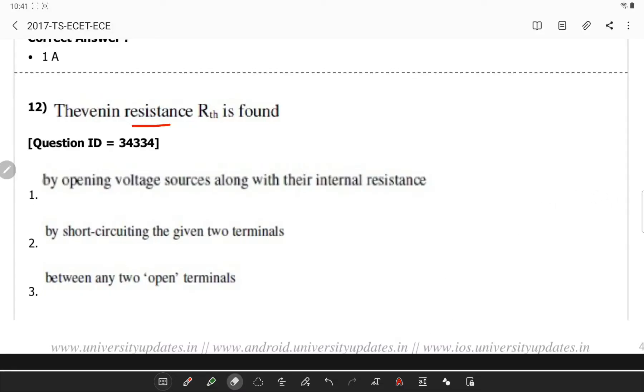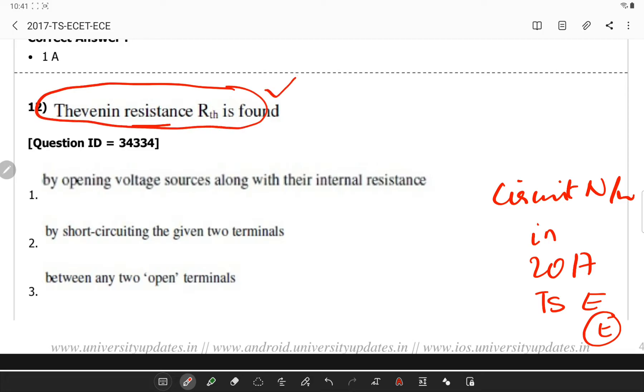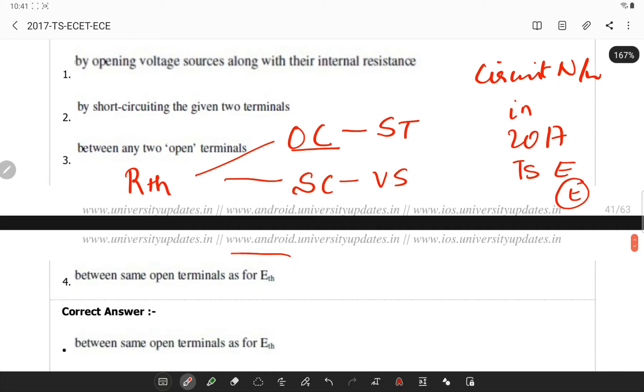Hello friends, today let's solve questions related to circuit theory or network theory in 2017 Telangana ECE-ESIT exam. Thevenin's resistance R-Thevenin is found out by generally calculating the resistance by opening the circuit between specified terminals and shorting all the voltage sources. If you see the options, it is between open terminals known as R-Thevenin.